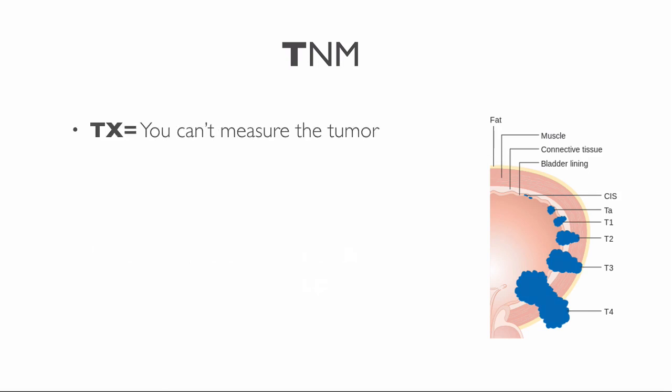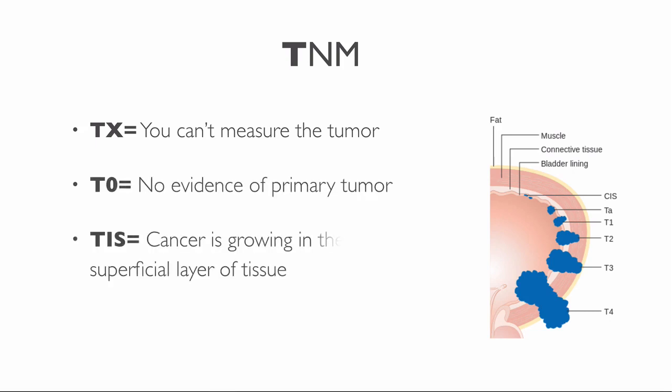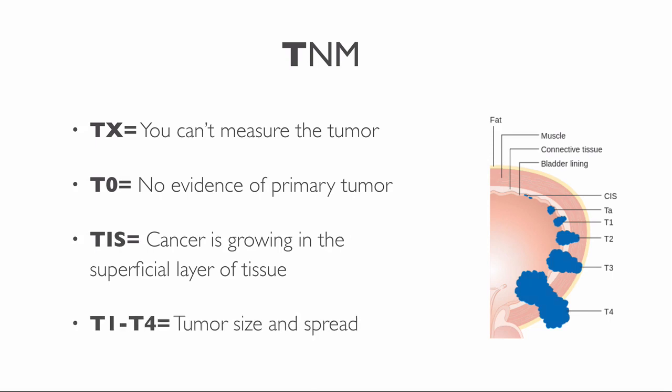TX means that you can't measure the tumor. T0 means there is no evidence of a primary tumor. TIS means that the cancer cells are only growing in the most superficial layer of tissue. Numbers after the T — such as T1 to T4 — describe the tumor size or the amount of spread into nearby structures. The higher the T number, the larger the tumor and the more it grows into adjacent tissues.